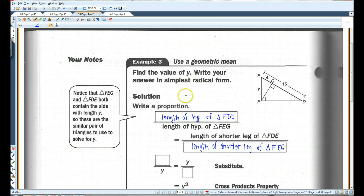Which corresponds with the length of the shorter leg of triangle FEG. The two triangles I'm using here, triangle FDE and triangle FEG. I'm using the hypotenuse and I'm using the shorter leg of each triangle. This is a proportion. The length of the hypotenuse of triangle FDE is 15. The length of the hypotenuse of triangle FEG is Y. The length of the shorter leg of FDE, that's the whole triangle, is Y. The length of the shorter leg of FEG is 4.